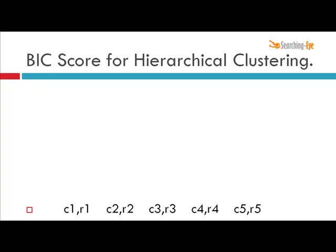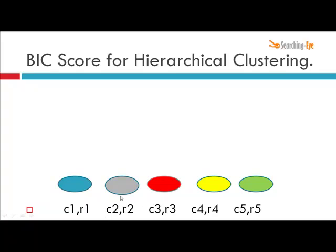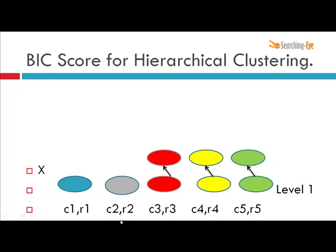At level one we have five clusters — C1 through C5 — each containing r1 through r5 data points, such that the sum of r1 to r5 equals N. We calculate the BIC score X for this set of clusters. Then, at level two, we consider merging two clusters and calculate the new BIC score.